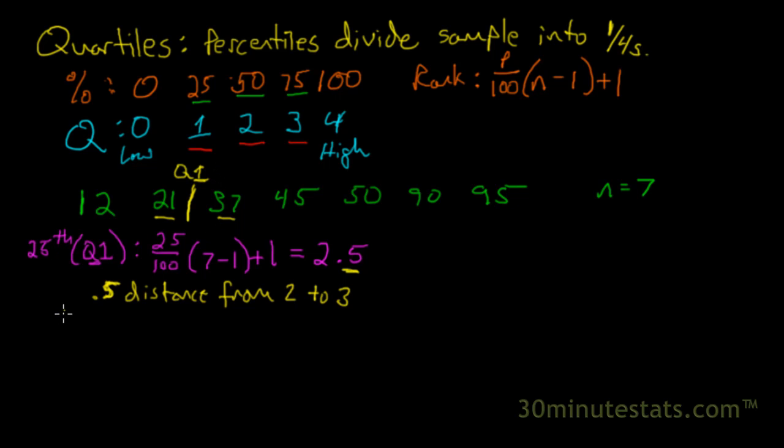To find Q1, we multiply 0.5, since we're looking for half the distance, between the third observation, 37, minus the second observation, which is 21. That'll get us the distance from the second to third observation. We'll multiply that by 0.5, and we'll come up with 8.